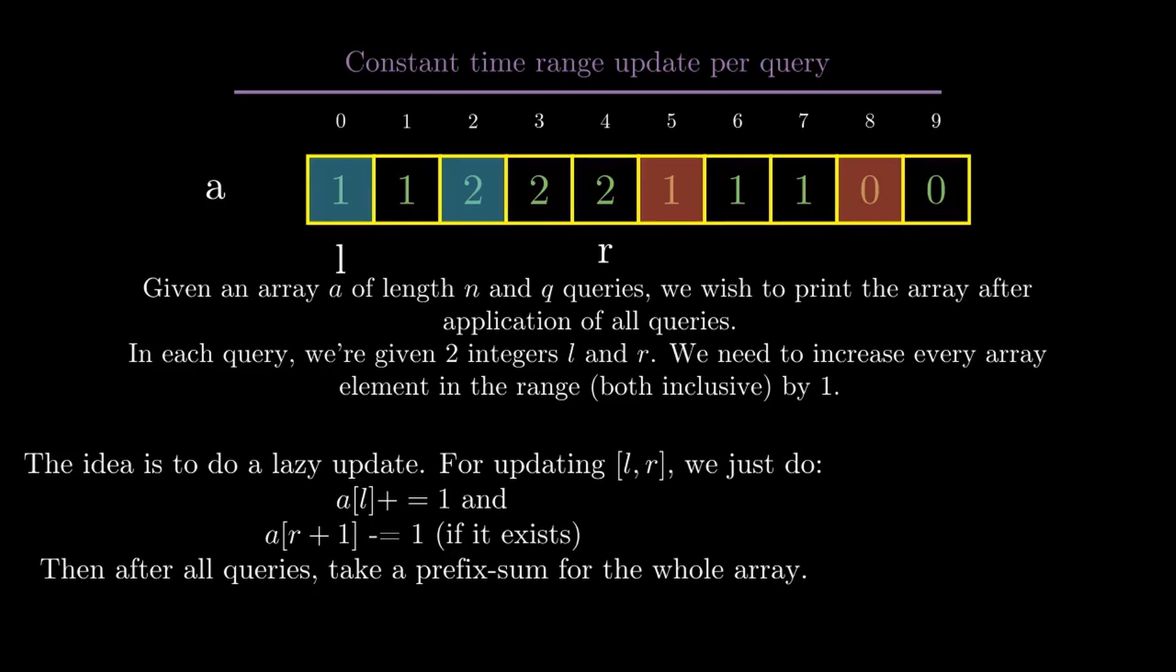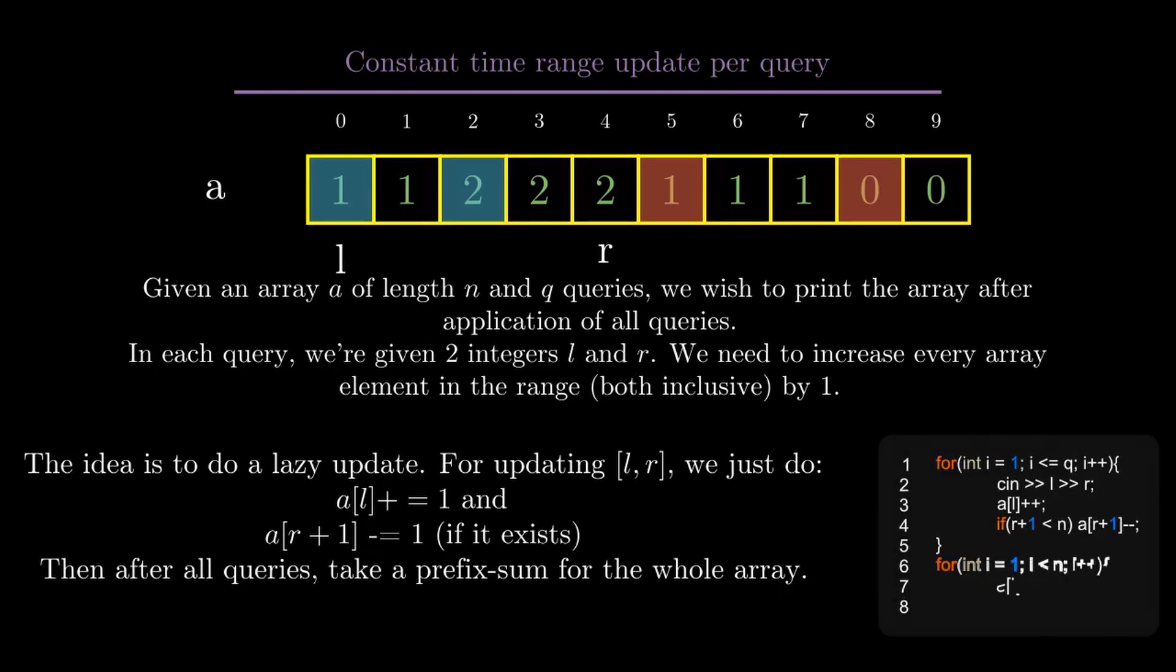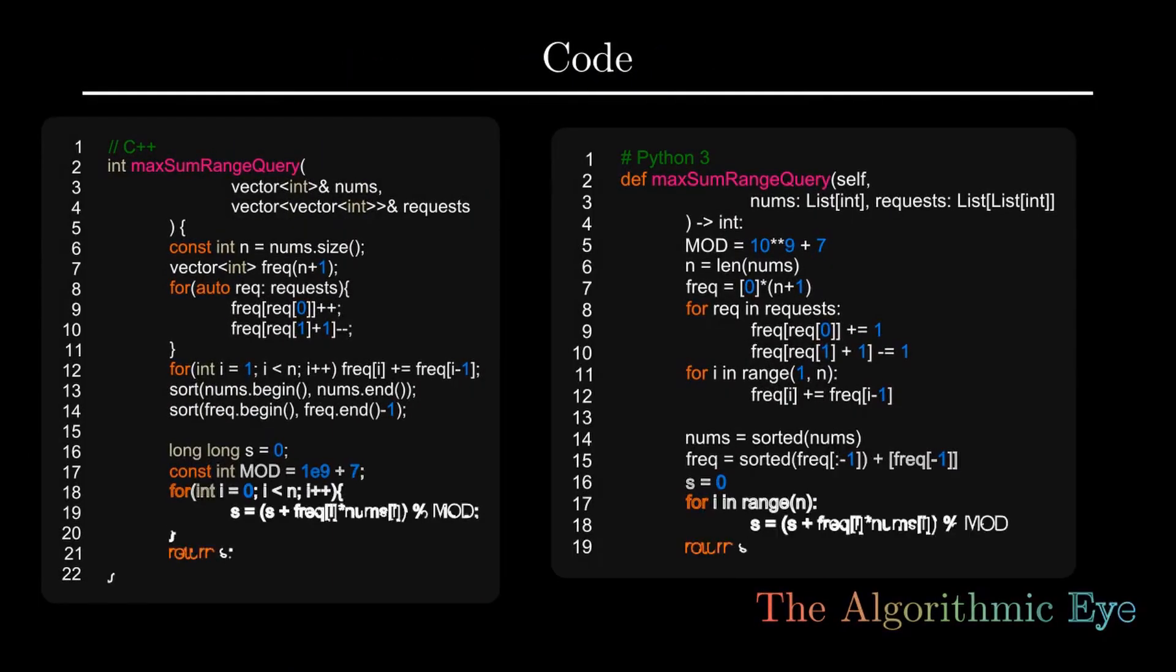Here's the code for doing the constant time range update per query. As you can see from the code, the time complexity of this approach is O(n + q), that is linear in the number of array elements and queries.